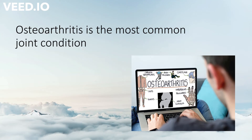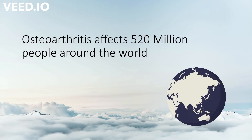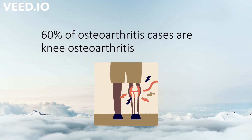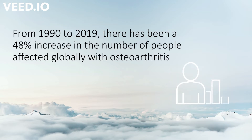Osteoarthritis, or OA for short, is the most common joint condition in the world. It affects 520 million people around the world — that is almost 100 times Singapore's population. Osteoarthritis is a leading cause of disability as it affects people in many ways. OA may reduce one's ability to move around independently and to use their arms functionally. 60% of all OA cases are knee osteoarthritis. Hip and knee osteoarthritis was ranked as the 11th highest contributor to disability, and it often causes pain and limits daily functions such as walking and squatting to pick things up from the floor. There was a 48% increase in the number of OA cases from 1990 to 2019.